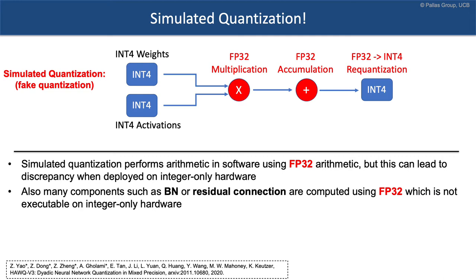This is a big problem. For many other components in the network, such as batch normalization, simulated quantization uses floating point to represent the batch norm parameters, which is problematic. If we quantize batch norm parameters, we get lower accuracy because batch norm is very sensitive. If floating point values are used here, we cannot deploy this quantized neural network on hardware that does integer-only arithmetic.